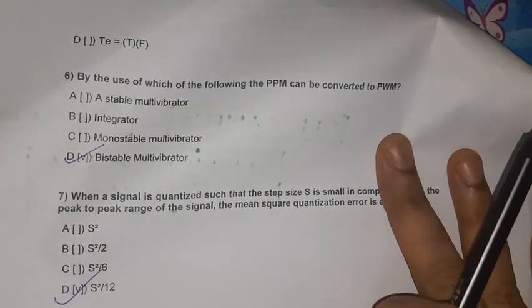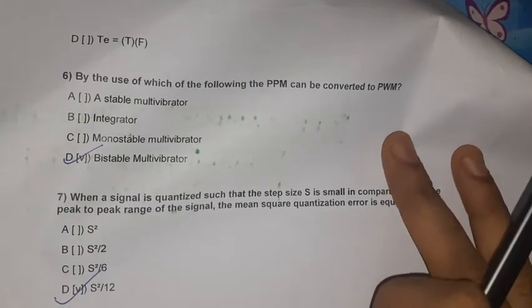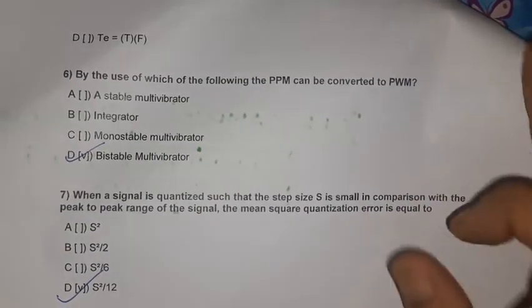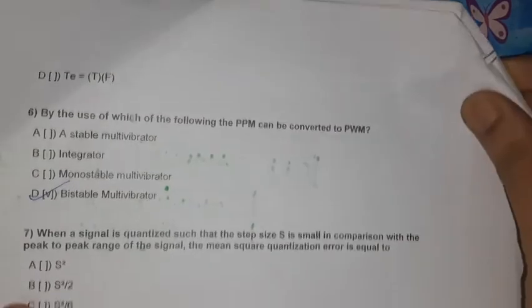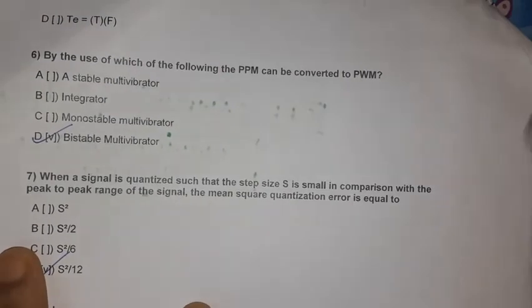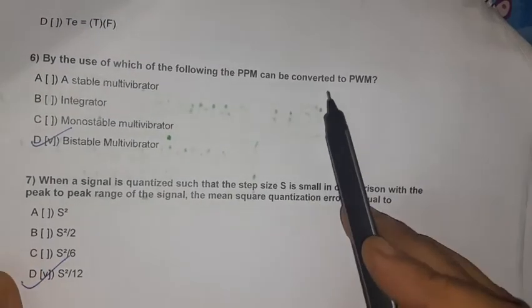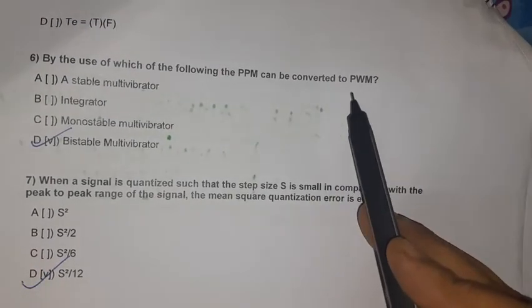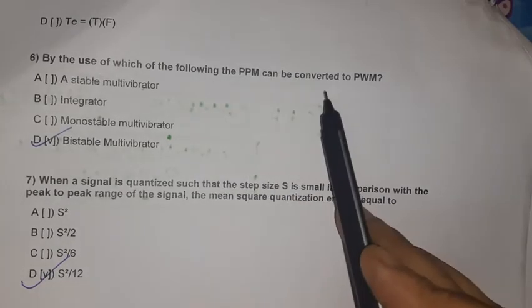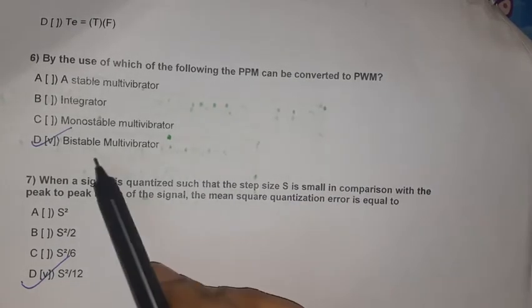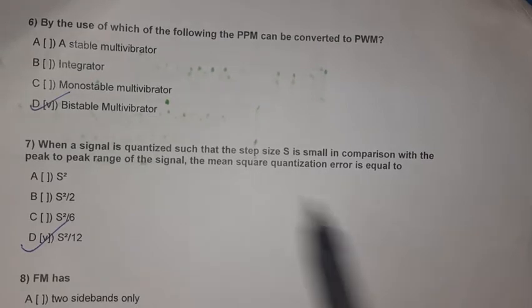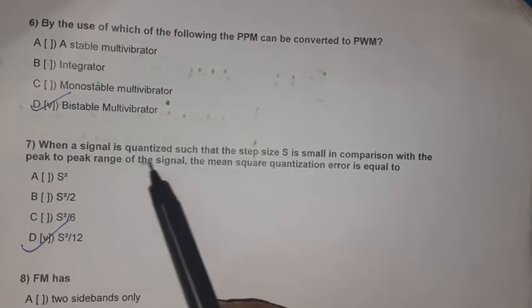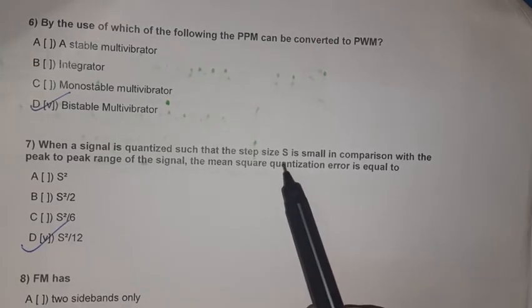Question 6: PPM (Pulse Position Modulation) can be converted into PWM (Pulse Width Modulation) by use of a bistable multivibrator.